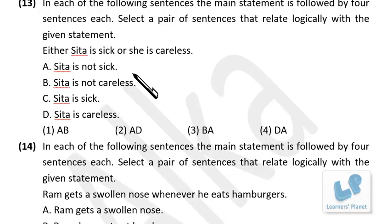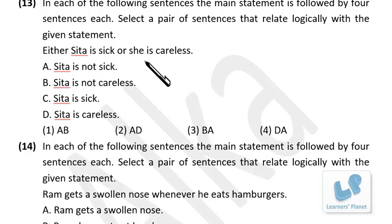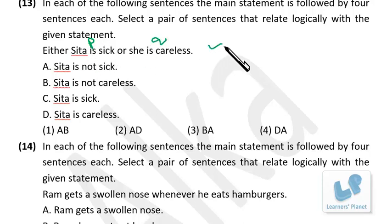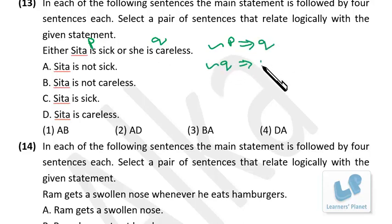Select a pair of sentences that relate logically with the given statement. We have done these sorts of questions in our previous session. Here we have an either/or combination — one of the things should happen. Either Sita is sick (P) or she is careless (Q). If P is not there, Q must be there; if Q is not there, P must be there.